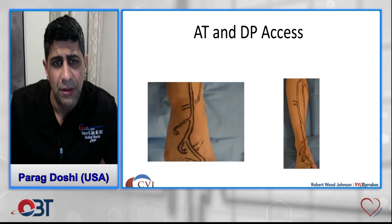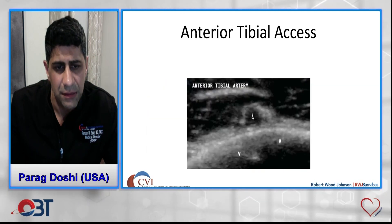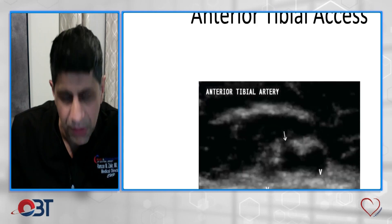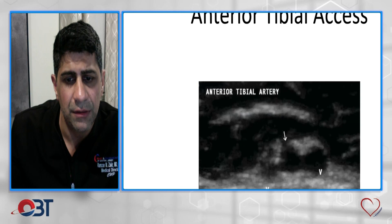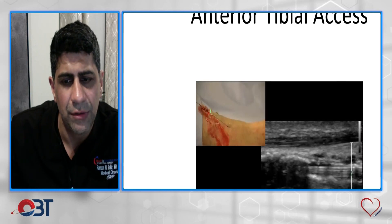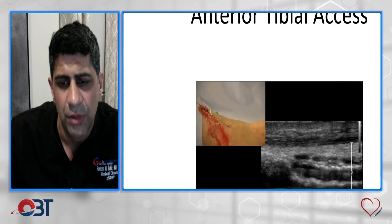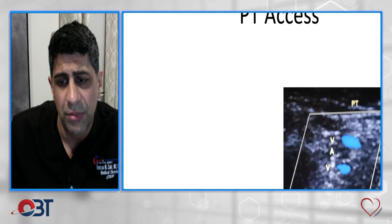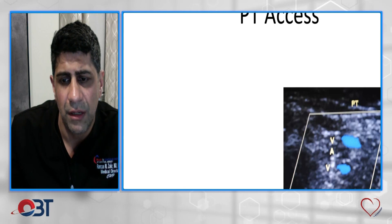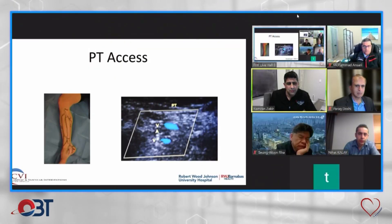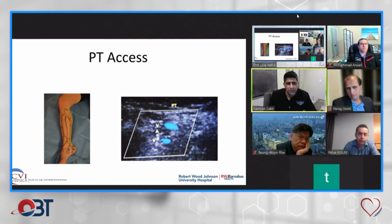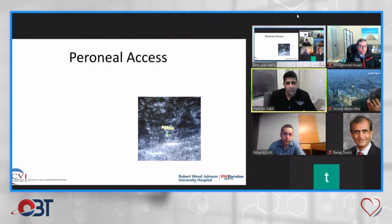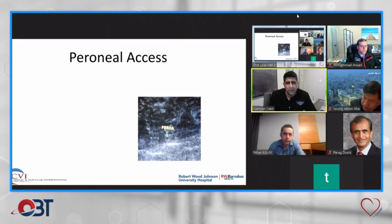We should all be very familiar with ultrasound. This slide maps out anterior tibial and dorsalis pedis access. We can see the tibial artery in longitudinal view with the wire going through the true lumen. This next view shows the posterior tibial artery location relative to the veins, and this is the peroneal artery, where we often use bony landmarks to gain peroneal access.